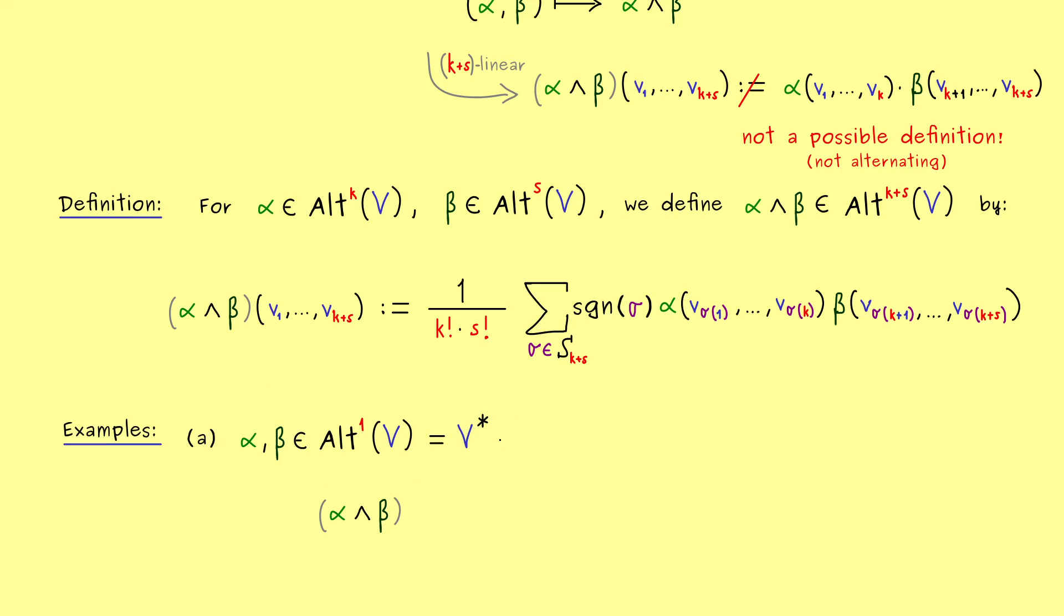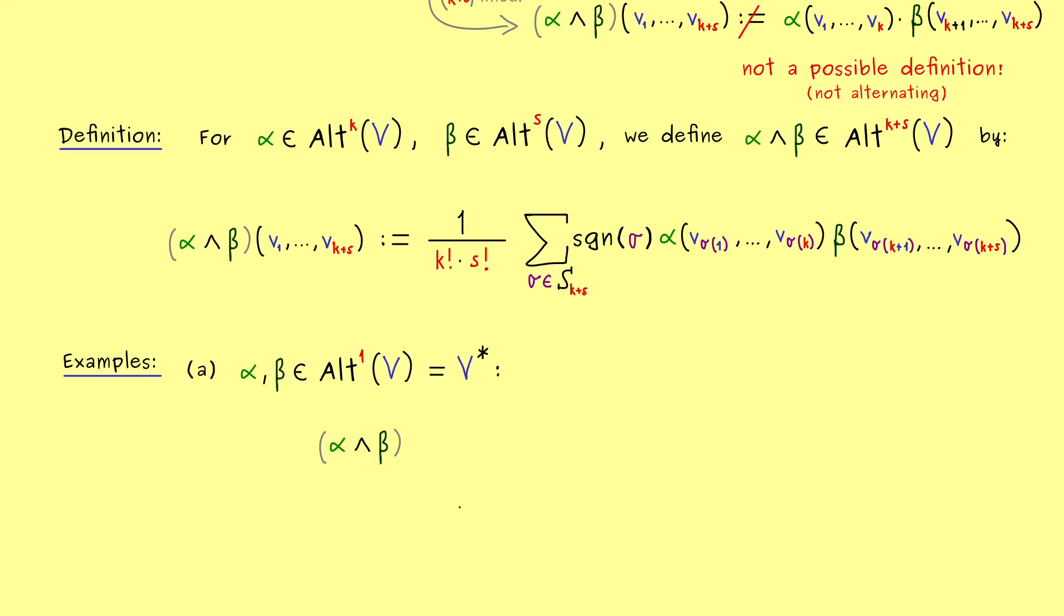However, now the wedge product should give us an alternating 2-form. And in fact, it is not hard at all to explicitly calculate all the terms in the sum here. Simply because there are only two permutations at all.